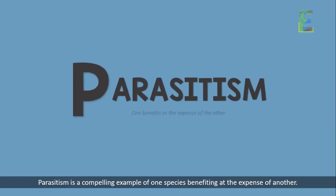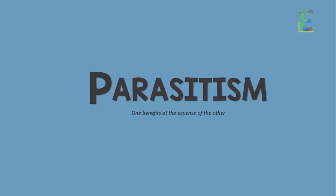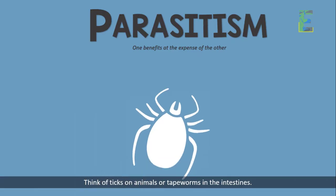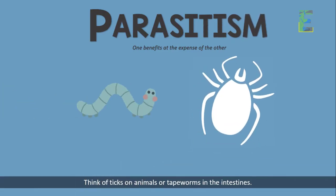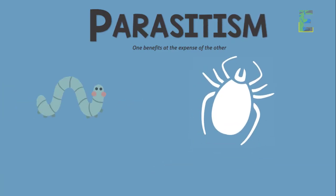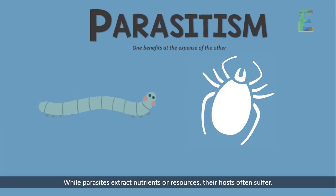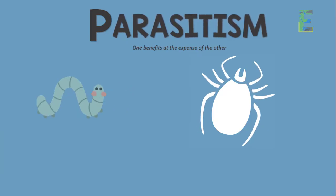Parasitism is a compelling example of one species benefiting at the expense of another. Think of ticks on animals or tapeworms in the intestines. While parasites extract nutrients or resources, their hosts often suffer.